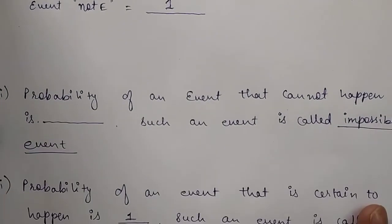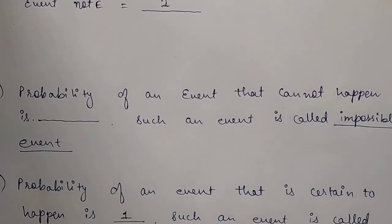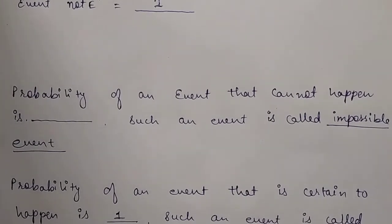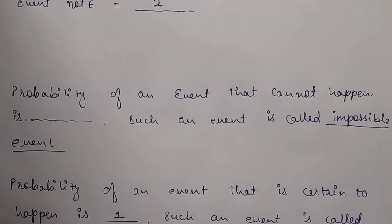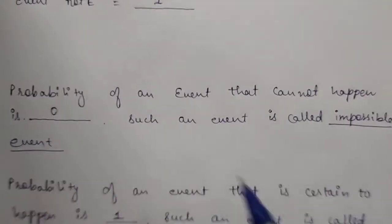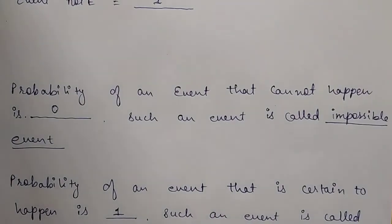Let's move on to the second question. The probability of an event that cannot happen is zero. Such an event is called an impossible event. An event that can never happen, what are its chances? The event that can never happen, its chances will always be zero, and we call such an event an impossible event.